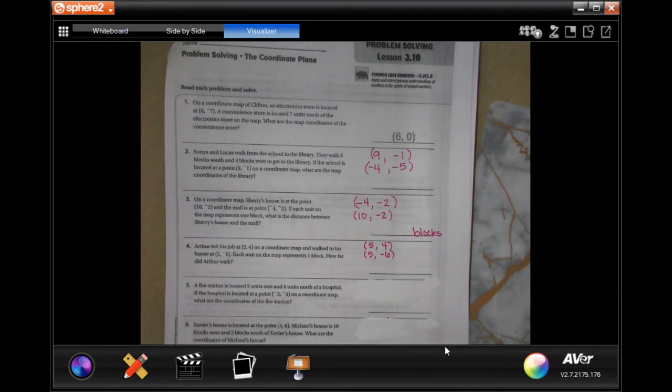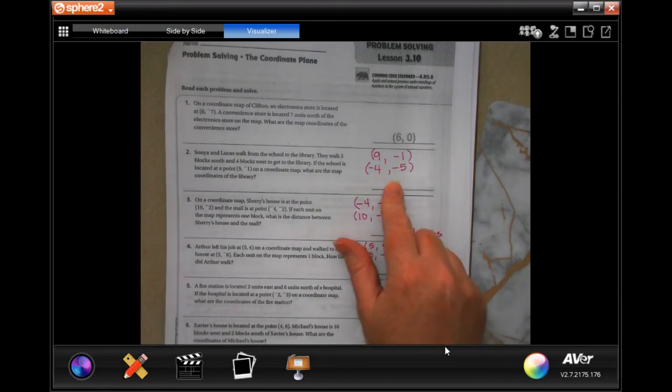Sonia and Lucas walk from the school to the library. They walk 5 blocks south and 4 blocks west to get to the library. If the school is located at 9, negative 1 on a coordinate map, what are the map coordinates of the library? Well, so we can do it this way. It's a little bit tricky.